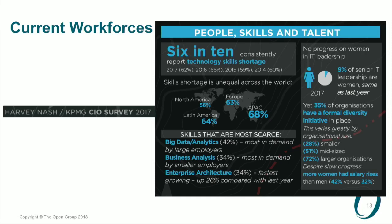In all of this digital transformation, we've got a workforce issue. The Harvey Nash KPMG survey highlights that three roles — big data and analytics, business analysis, and enterprise architecture — are in a world of hurt; there just aren't the people out there. This kind of flies in the face of conventional wisdom about the death of EA, given that enterprise architecture in 2017 was the fastest growing job category globally. The shortage of these resources is a global problem; North America is in the best shape whereas Asia Pacific has a serious shortage.